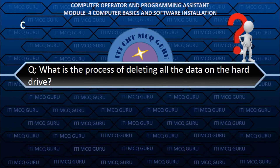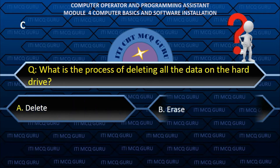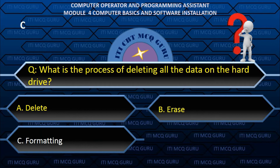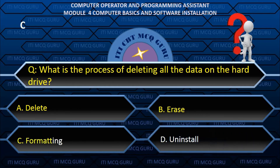What is the process of deleting all the data on the hard drive? — C. Formatted.